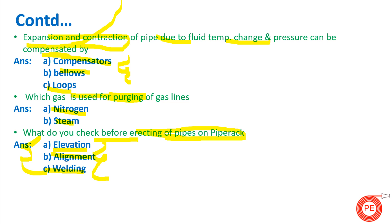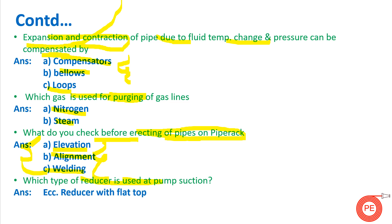The next question is: which type of reducer is used at pump suction? An eccentric reducer with flat top is used at pump suction. The eccentric reducer is used so that cavitation inside the pump can be prevented — otherwise cavitation will occur and harm the functioning of the pump.